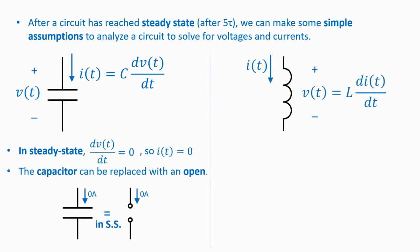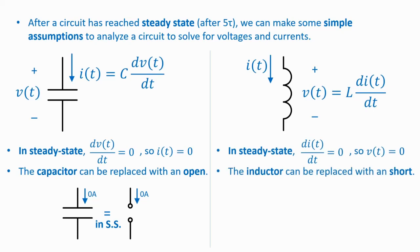A similar assumption can be made for an inductor. Remember that the voltage across an inductor is L di/dt. In steady state, the current is constant, so the derivative di/dt is zero. This means that the voltage V is also zero. Because V is zero, the inductor can be replaced by a short. In steady state, an inductor behaves like, and is equivalent to, a short.